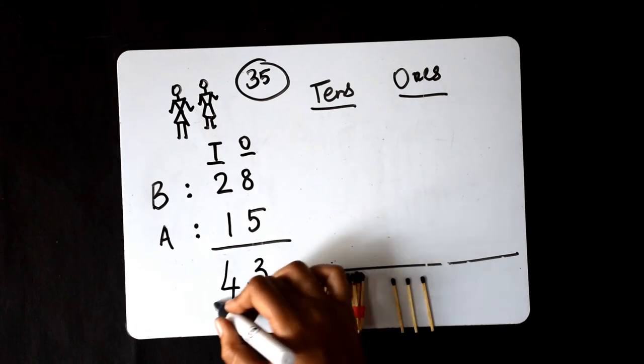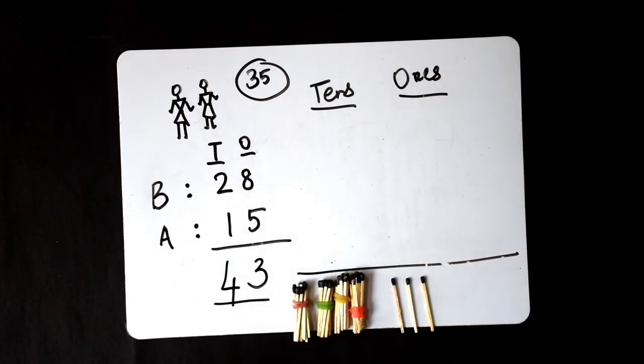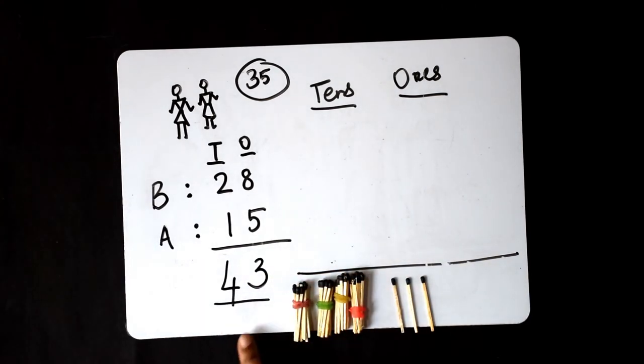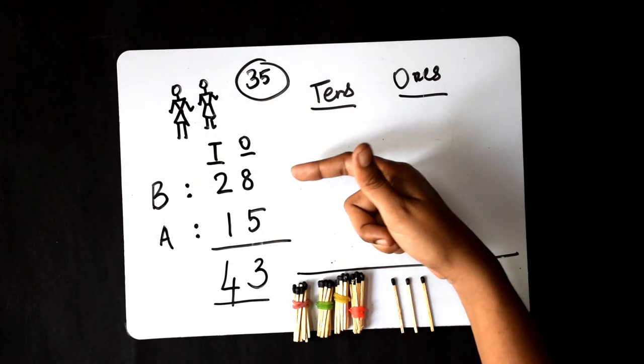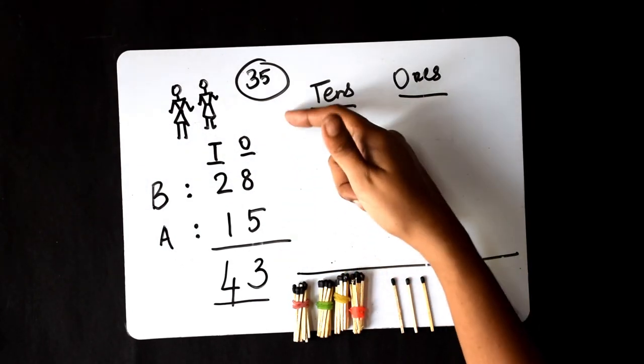Now, let's count the number which we have here and verify if it's correct. We have 10, 20, 30, 40, 41, 42, 43. So, Barchi and Anjana have 43 rupees and not 35 rupees.